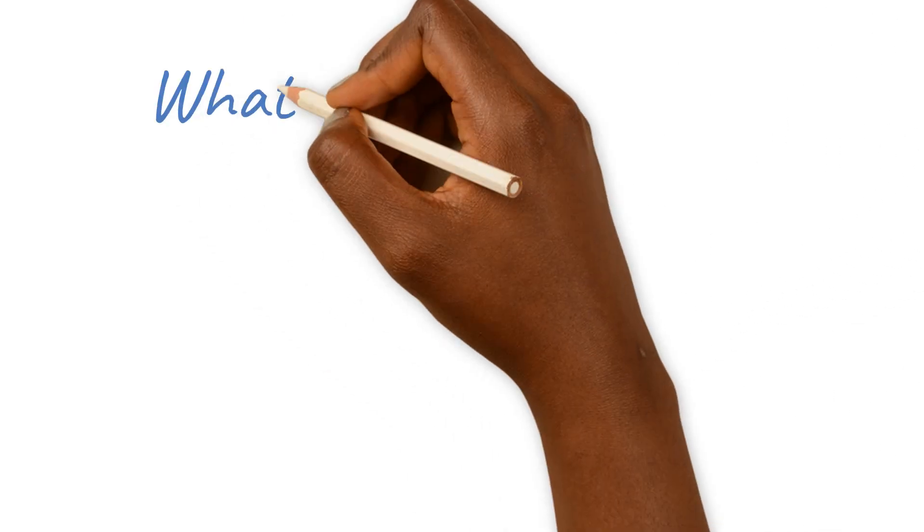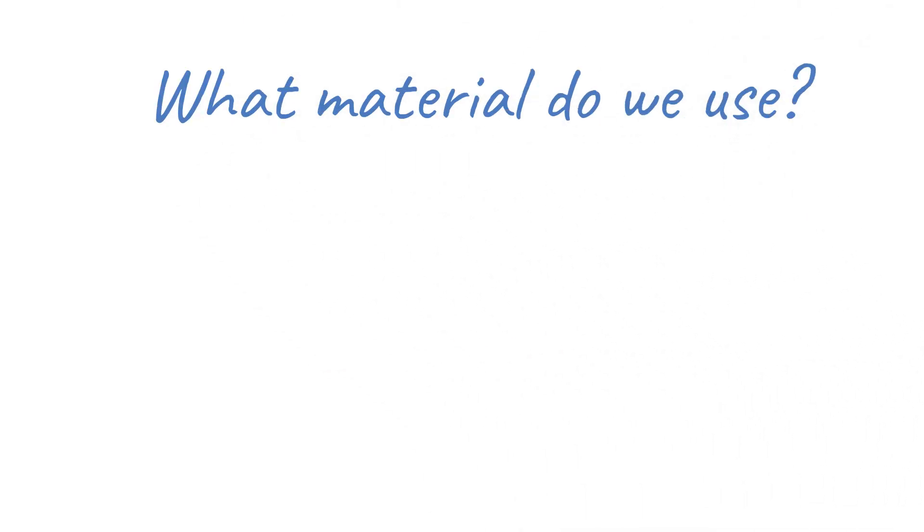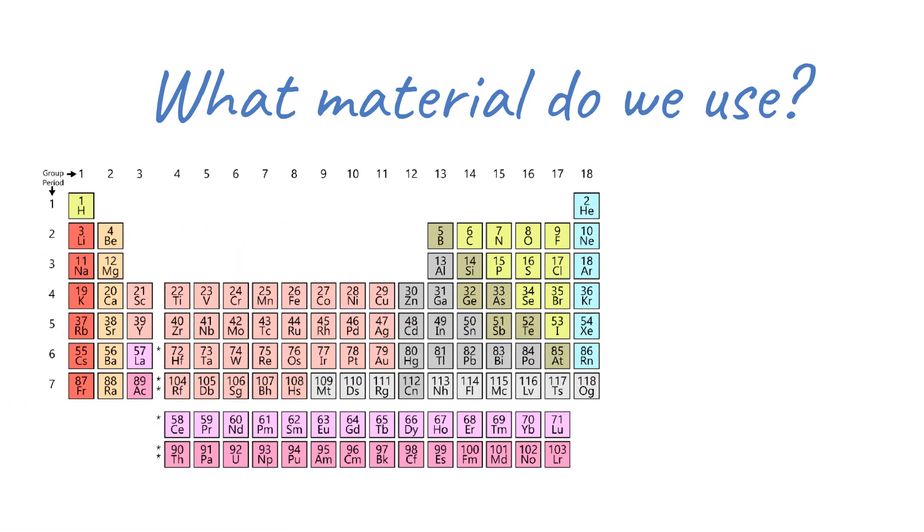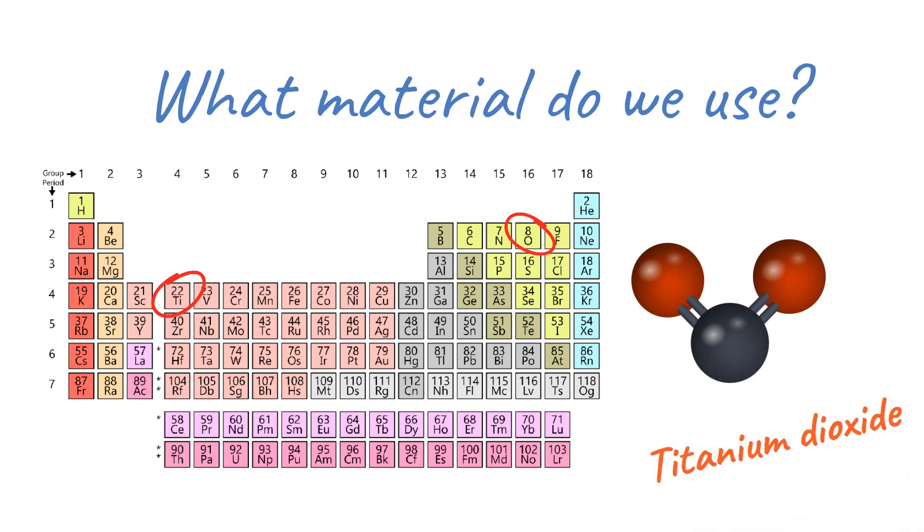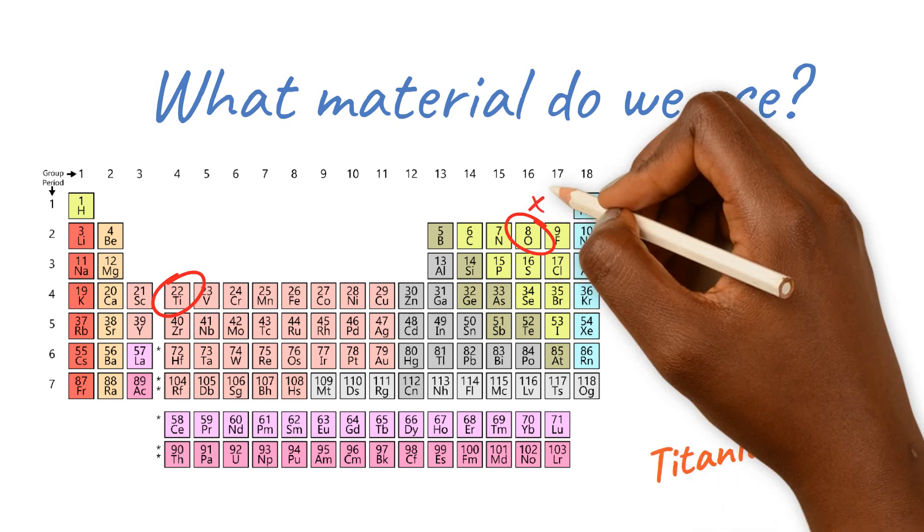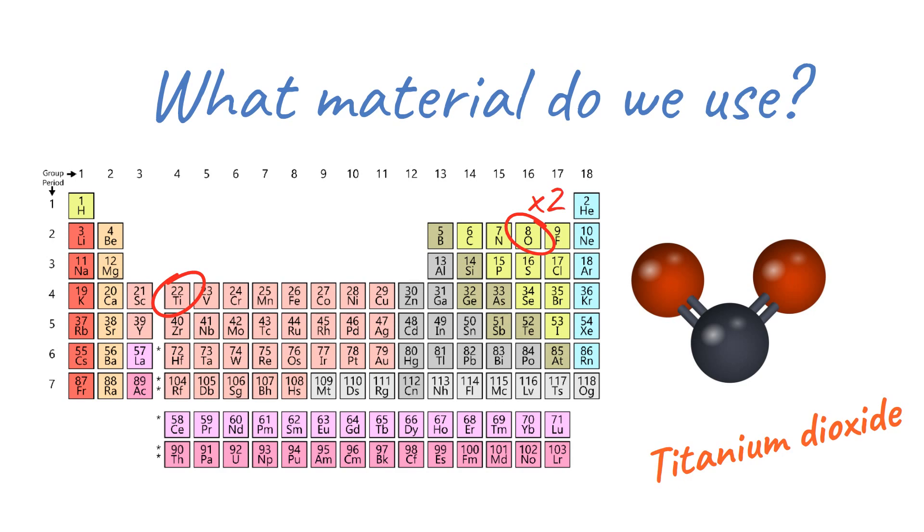So you might be wondering, what type of material can we use to do photocatalysis? Well, in my lab, I use a material that's made up of titanium and oxygen, and it's called titanium dioxide. It is called that because for each titanium atom, there are two oxygen atoms linked to it.